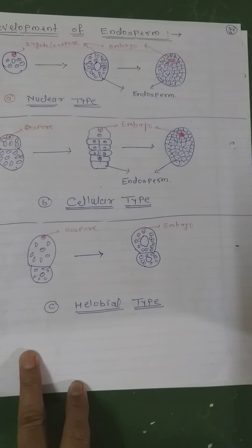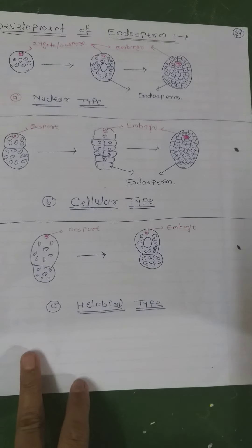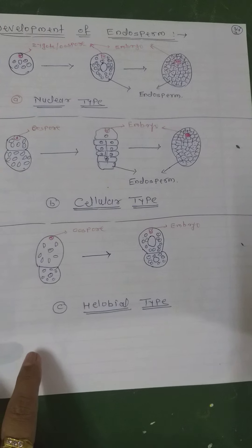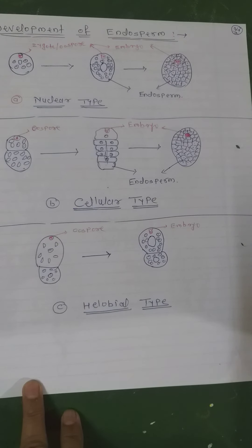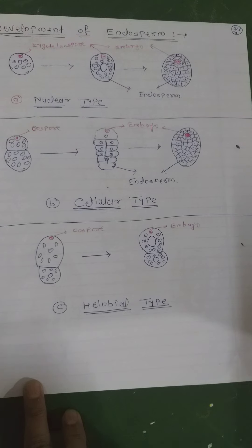Hence multicellular endosperm is formed. But in several cases, cell wall formation remains incomplete — for example, wheat, sunflower, and coconut. Coconut has multicellular endosperm in the outer part and free nuclear as well as vacuolated endosperm in the center. This nuclear type of endosperm is found in 161 angiosperm families.